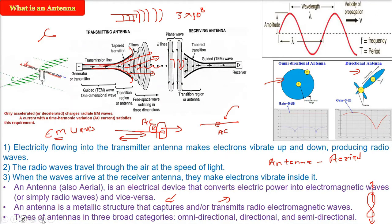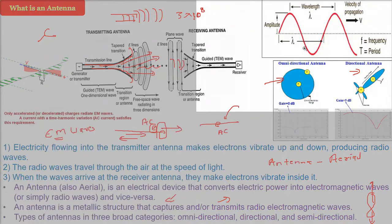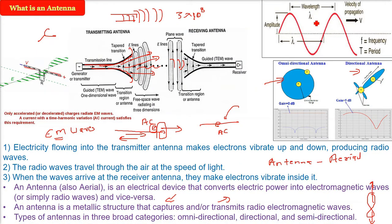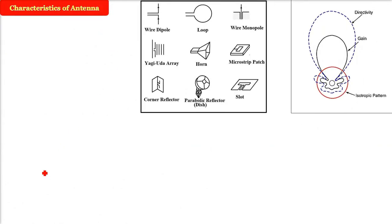Let me tell you a few things about electromagnetic waves in order to understand the parameters of an antenna. This is the wave structure. The tops are called crests and the below are called troughs. The distance between the crests and troughs is called the wavelength, represented by lambda. The distance from the central line by which the wave is oscillating is called the amplitude. Frequency is the number of oscillations per second, and the reciprocal of frequency is the period. Frequency is measured in hertz; wavelength in meters or centimeters.